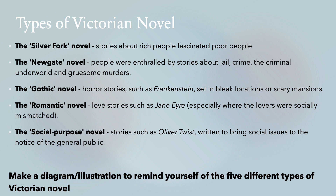Your task now is to make a diagram or an illustration to remind yourself of the five different types of Victorian novels. You might come up with a little picture for each one and then note down its name and what it was about.